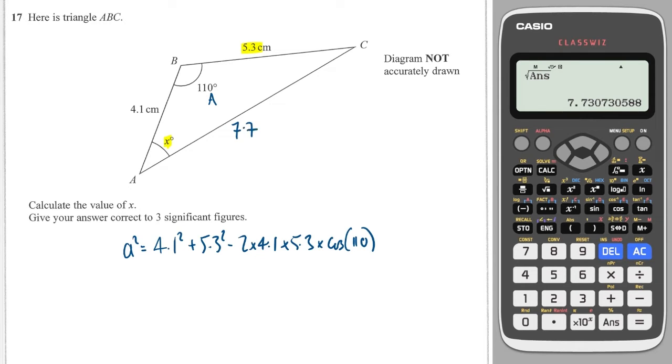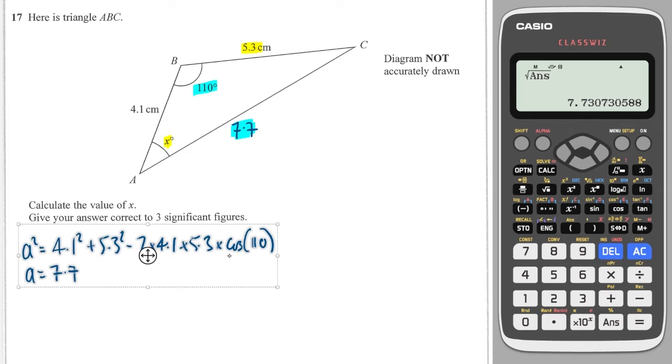So now this is 7.7. So now I do have an angle and its opposite pair which means I can use the sine rule. The sine rule states that sine of the angle over its opposite side 5.3 is equal to sine of another pair over its opposite side.